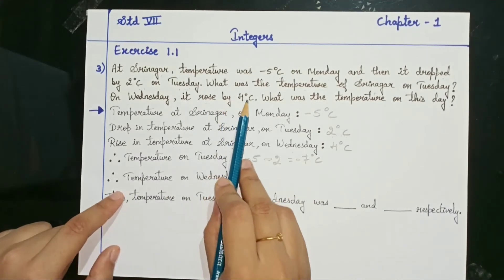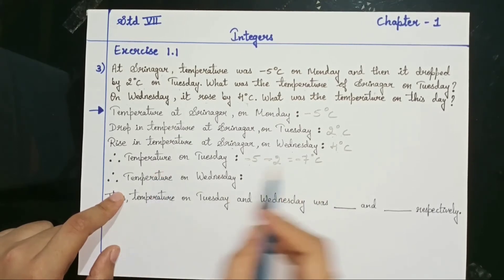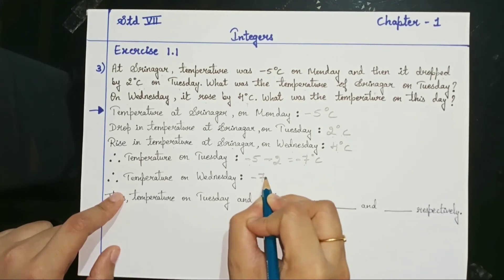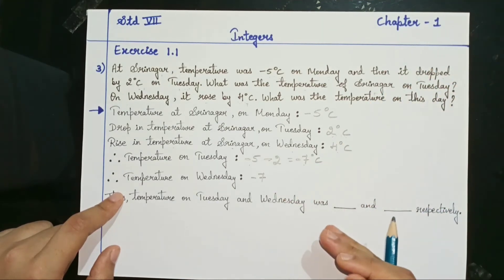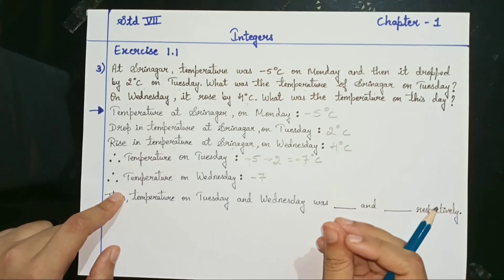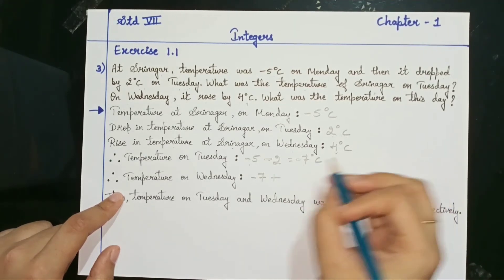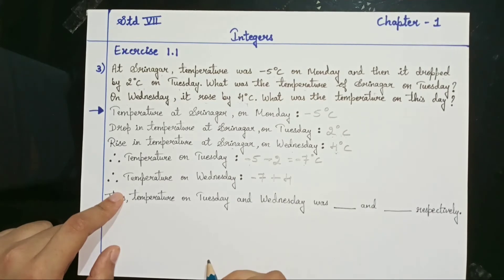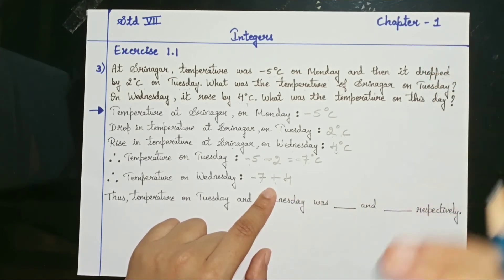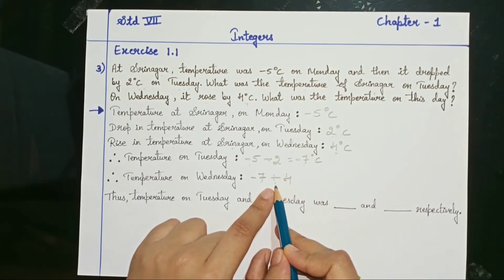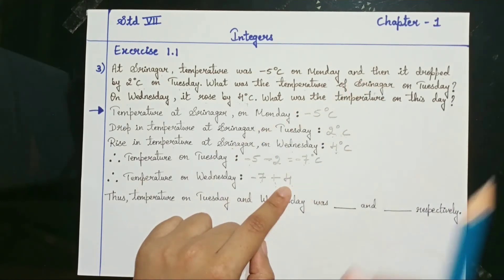On Wednesday, it rose by 4 degrees. On Tuesday it was minus 7, so we start from minus 7. Rose means it became high — rose means it became high, so you have to do addition. The temperature on Tuesday was minus 7, and why plus? Because the temperature is rising. It rose by 4 degrees, so we write plus 4.